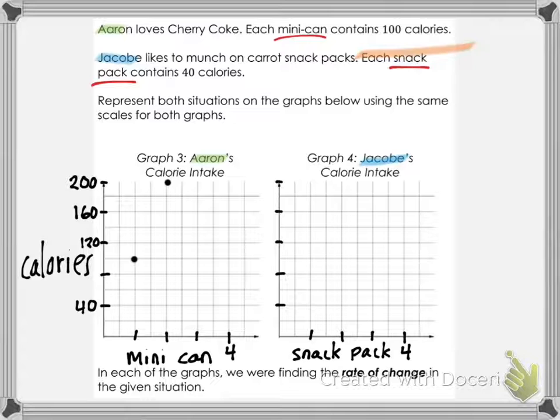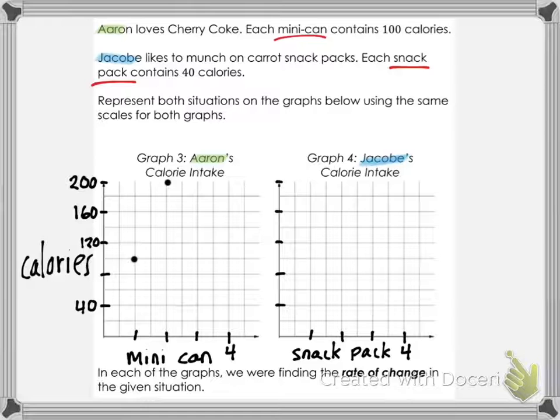Aaron loves the Cherry Coke mini cans and they are 100 calories a piece, so one mini can would be 100 calories. On the y-axis, we have 80 right here and 120 right there, so 100 would be in the middle of those two. After one can Aaron has had 100 calories, after two cans he is at 200 calories. There is his line — there is his rate of change.